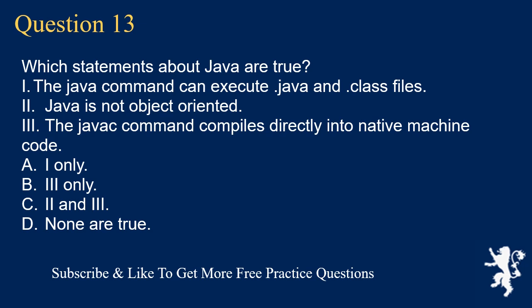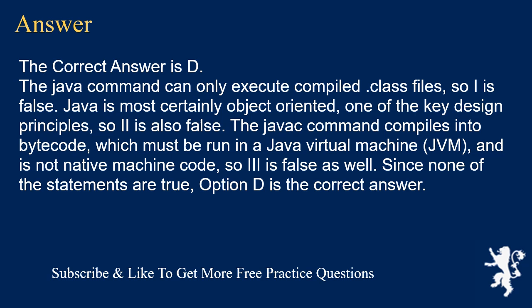Question 13: Which statements about Java are true? I) The java command can execute .java and .class files. II) Java is not object-oriented. III) The java command compiles directly into native machine code. A) I only, B) III only, C) II and III, D) none are true. The correct answer is D. The java command can only execute compiled .class files, so I is false. Java is most certainly object-oriented, so II is also false. The java command produces bytecode run in a JVM, not native machine code, so III is false as well.